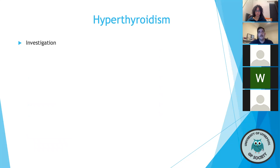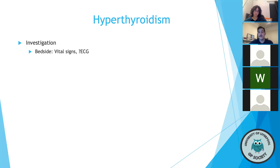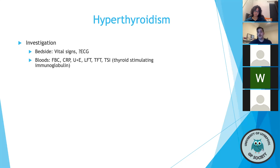When investigating, I like to use a framework: bedside, bloods, secretions, imaging, and other. At the bedside, do vital signs and an ECG — this lady may report palpitations, her heart may be racing, potentially indicating tachycardia or arrhythmia. For bloods, screen for differentials; TFTs are the important part. You can distinguish primary from secondary thyroid disease: if TFTs show hyperthyroidism, check TSH levels — high TSH indicates a secondary cause, while low TSH indicates a primary cause.